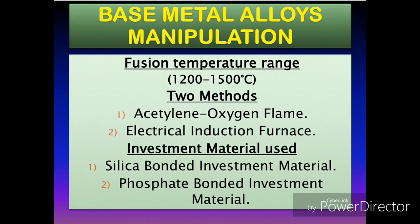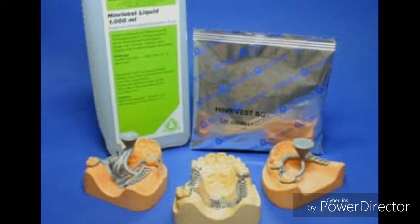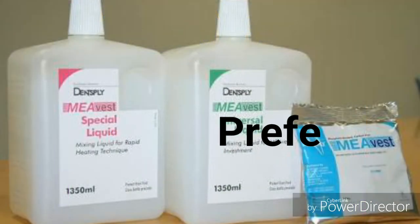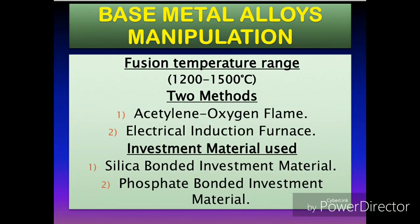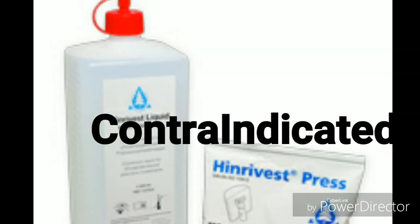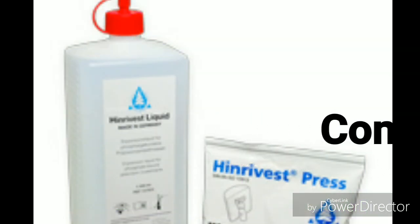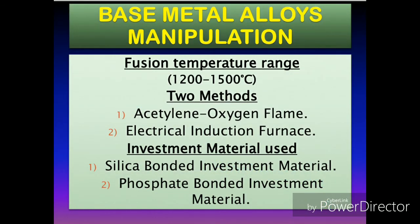For this reason, silica-bonded and phosphate-bonded investment materials are favored, and out of these two, phosphate-bonded are more preferred. Gypsum-bonded investment materials are not used for base metal casting alloys because they decompose above 1200 degrees centigrade, forming sulfur dioxide which may get absorbed in the casting.